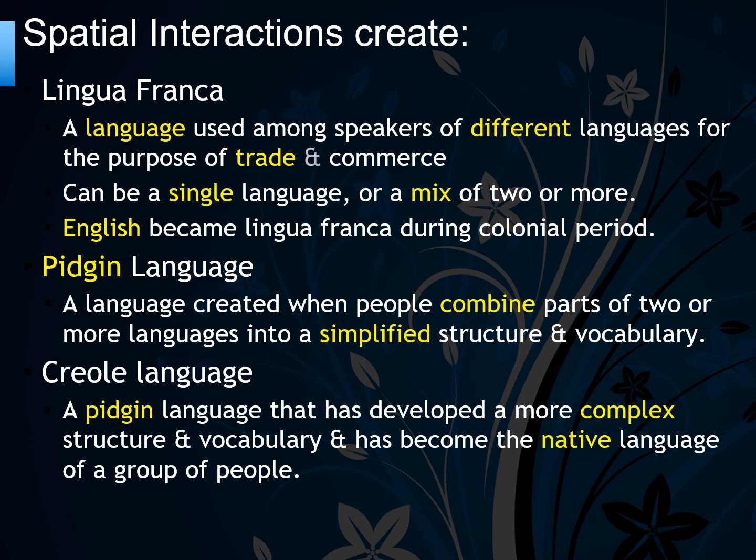A pidgin language is created when people combine parts of two or more languages into a simplified structure and vocabulary for basic communication. A creole language is when a pidgin has developed into a more complex structure and become the native language of a group of people, like Haitian Creole — a mix of West African languages and French.